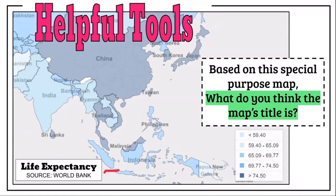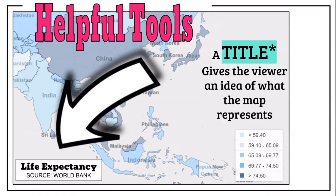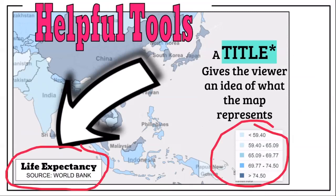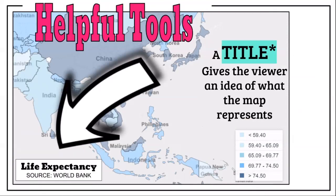The title is Life Expectancy, and the title gives the viewer an idea of what the map represents. Without this title, I could have this key — which is wonderful — but I don't really know specifically what I'm analyzing. So that title is incredibly important.